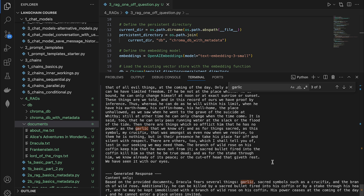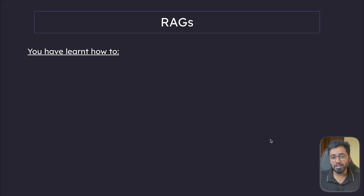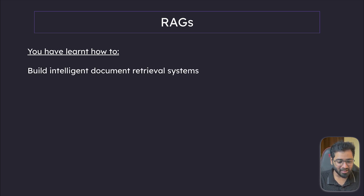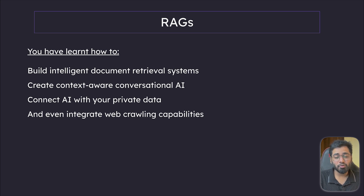If you remember, we already did that in the chat models module, and you can implement the same thing here. With that, we've completed our deep dive into RAGs. Take a moment to appreciate how far we've come. You are currently in the top 5% of developers who can build RAG systems and build these intelligent retrieval systems using LangChain. You can now build intelligent document retrieval systems, create context-aware conversational AI, connect AI to your private data, and even integrate web crawling abilities. If you're finding value in this journey, please don't forget to click the subscribe button, because it really helps the channel grow and gives me more incentive to make more advanced AI-related content.